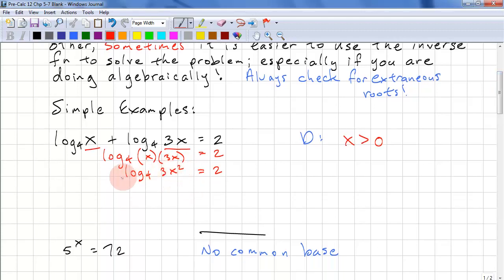So solving for this might be difficult. Let's exponentiate both sides with the base of 4. That would cancel log₄ out. So this is 3x². And now we have 4 raised to the power of 2.